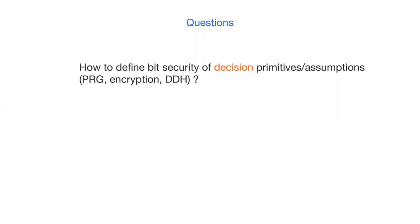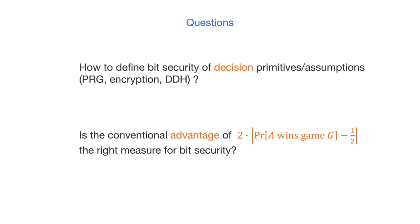In the decision game, the adversary's winning probability is designed to be close to one-half. So, we usually define the advantage of the adversary as two times the absolute value of the winning probability minus one-half. We want to know if this advantage is the right measure for evaluating bit security.